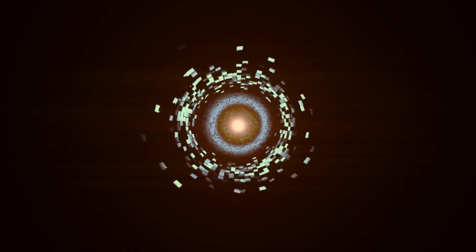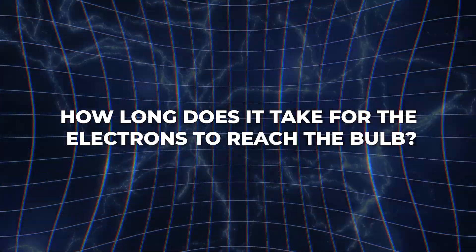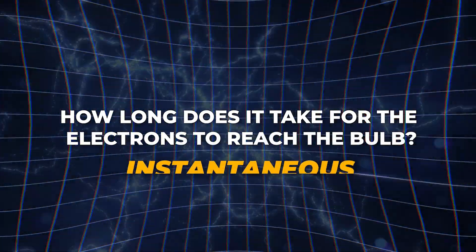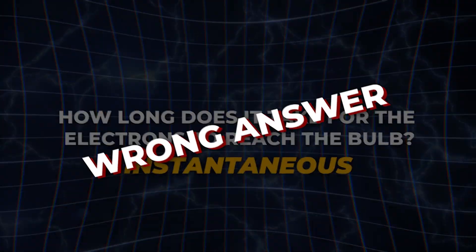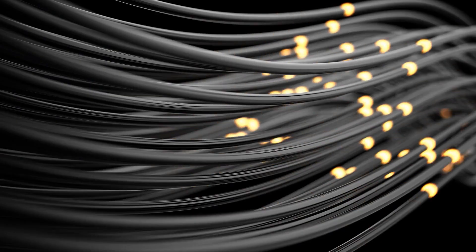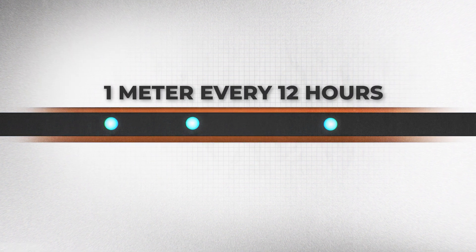When I flip the switch, how long does it take for the electrons to reach the bulb? It seems instantaneous, but that would be the wrong answer, for a couple of reasons. First, the movement of the electrons in the copper wire is very slow. Approximately 1 meter every 12 hours.